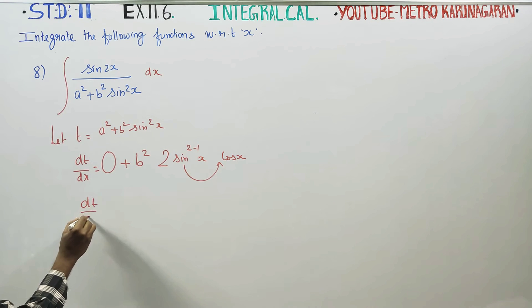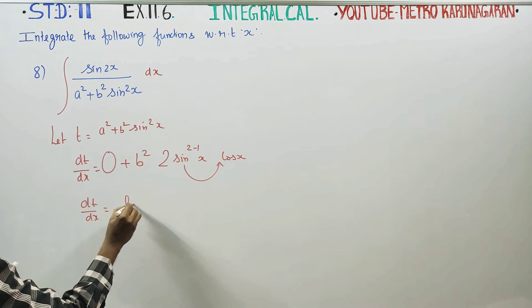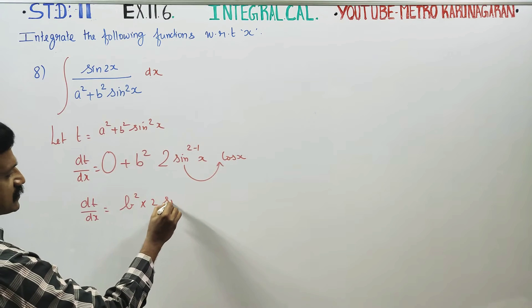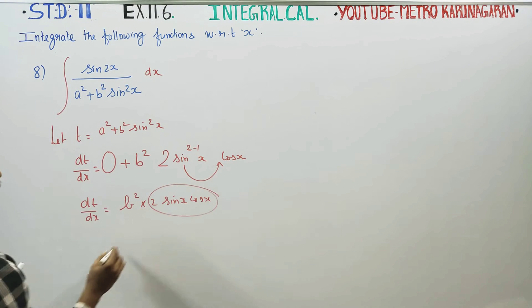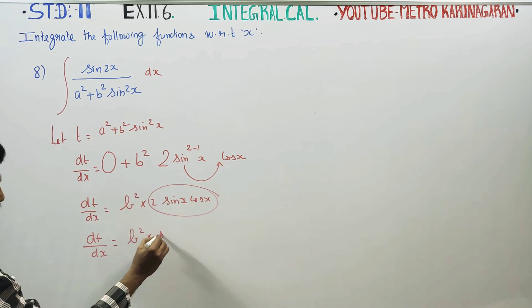dt by dx is equal to b square into 2. This is sine x cos x. What is 2 times sine x cos x? Sine 2x, double angle formula.